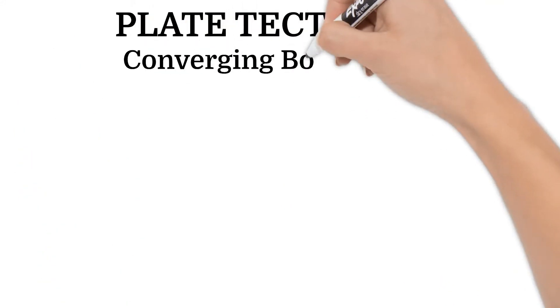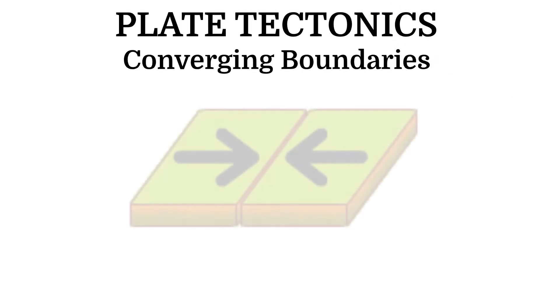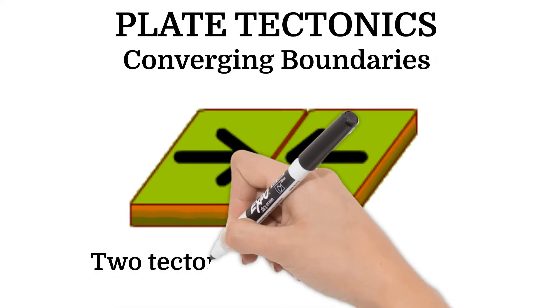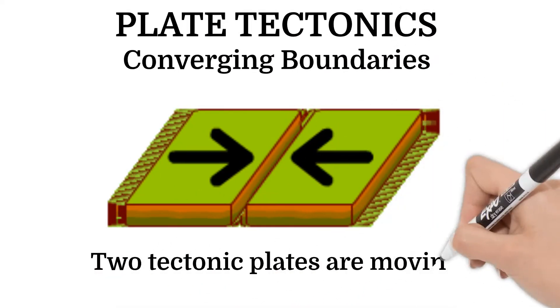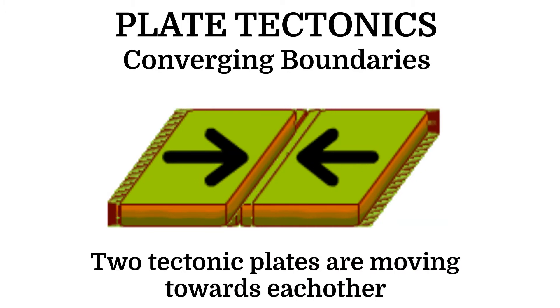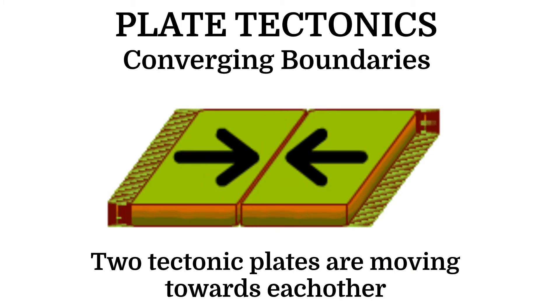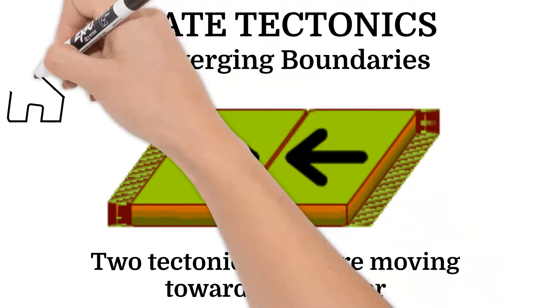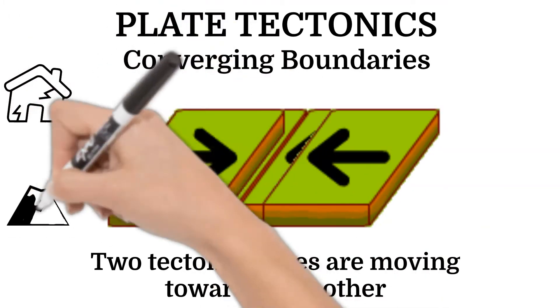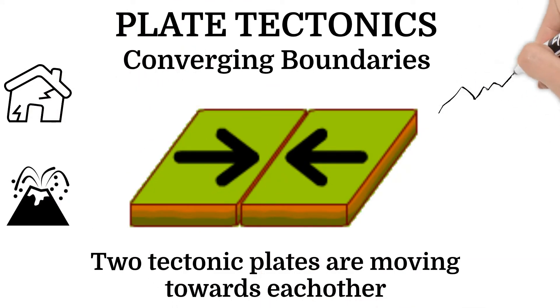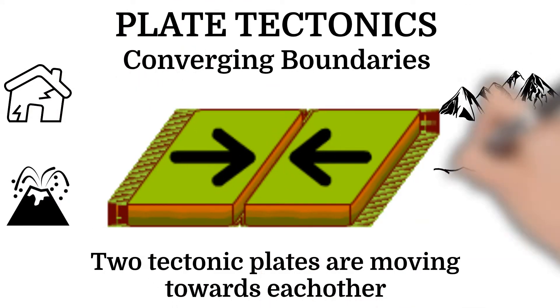Converging boundaries are where two tectonic plates are moving towards each other. These boundaries cause earthquakes, volcanoes, and can form mountains and ocean trenches.